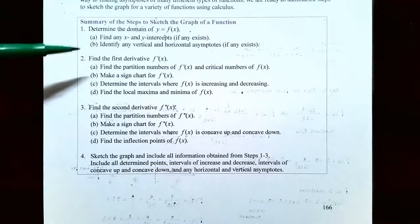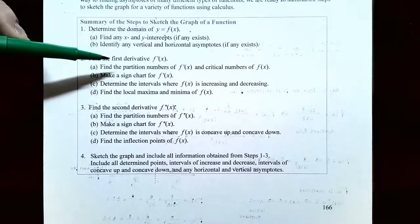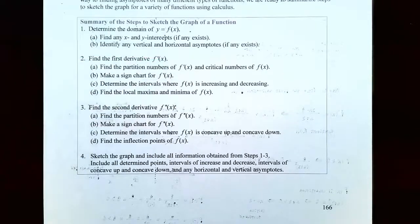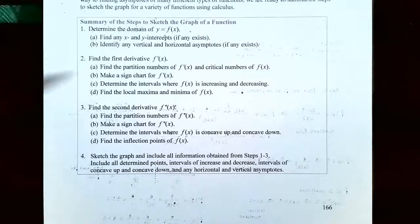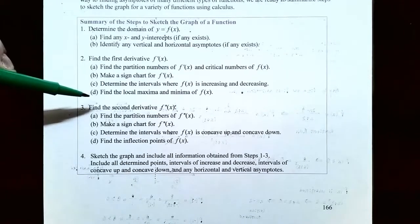Step two is to calculate the first derivative f'(x). We identify the partition numbers for f'(x) and the critical numbers for f(x). We make a sign chart for f'(x), identify where the function is increasing and decreasing based on the sign of the first derivative, and identify any local maxima or local minima using the first derivative test.